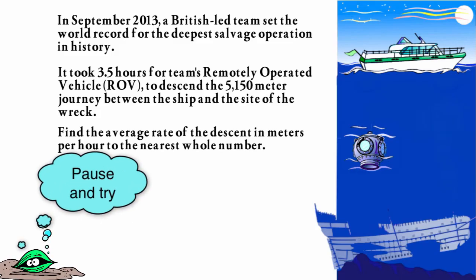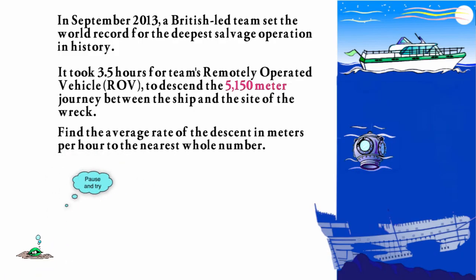Find the average rate of descent in meters per hour to the nearest whole number. Pause the video and try this on your own. When you're ready, we'll go over it. The remotely operated vehicle is going negative 5,150 meters, since they're going down below sea level. It takes them 3.5 hours. To find the average rate of descent, we would divide negative 5,150 by 3.5.